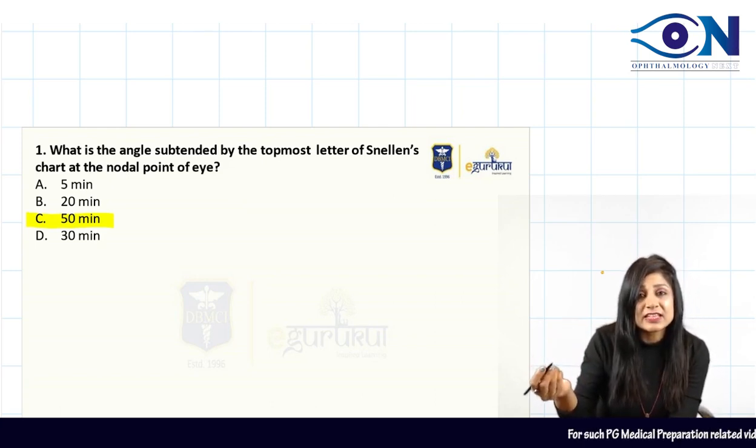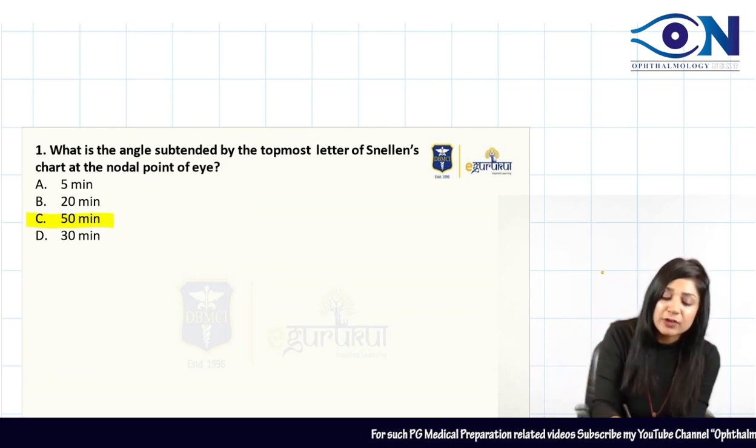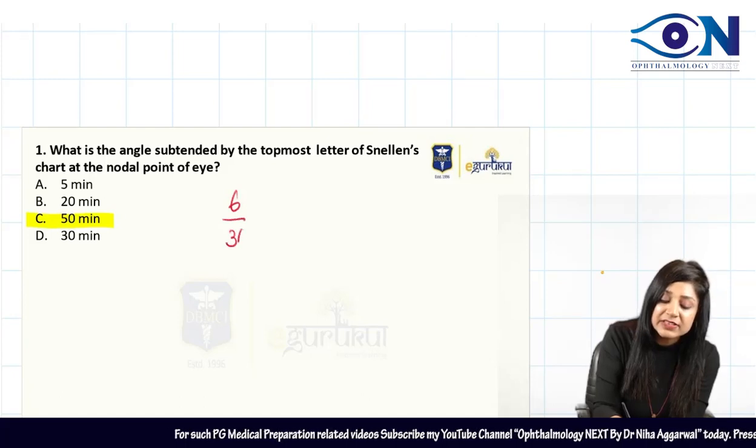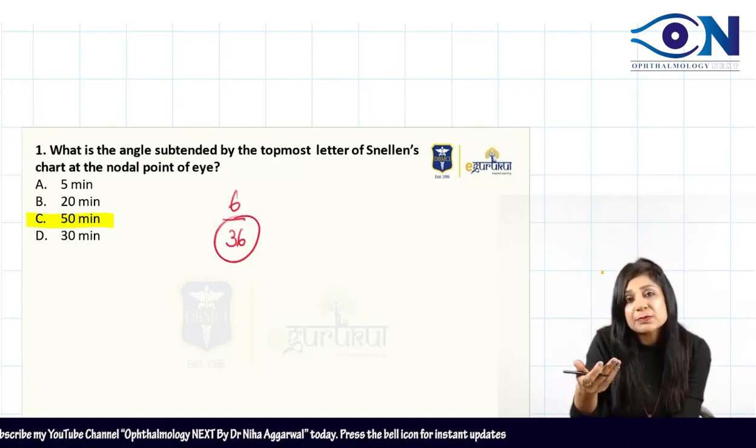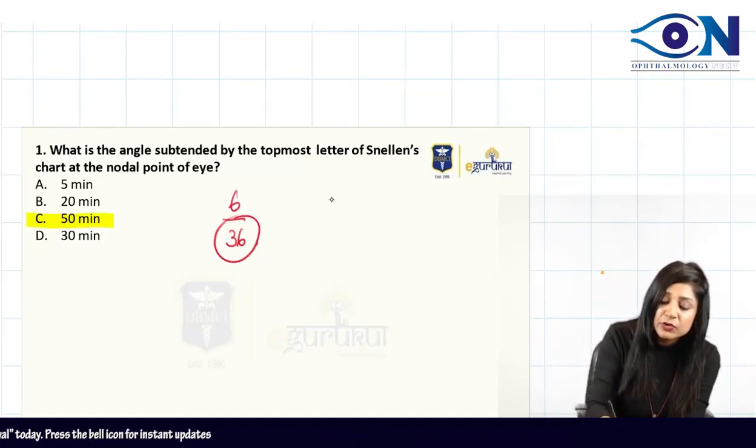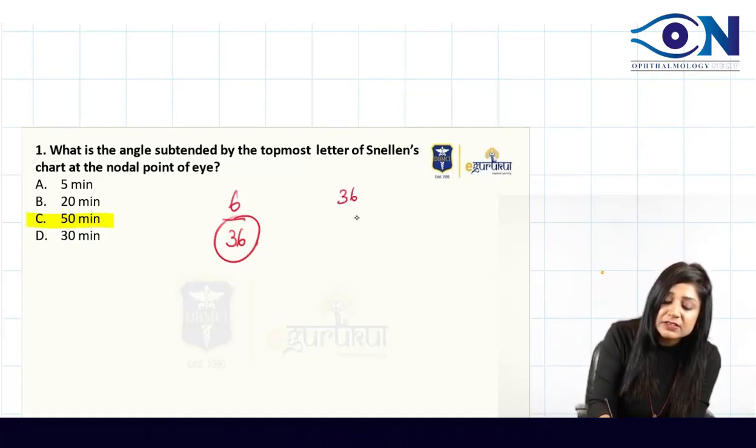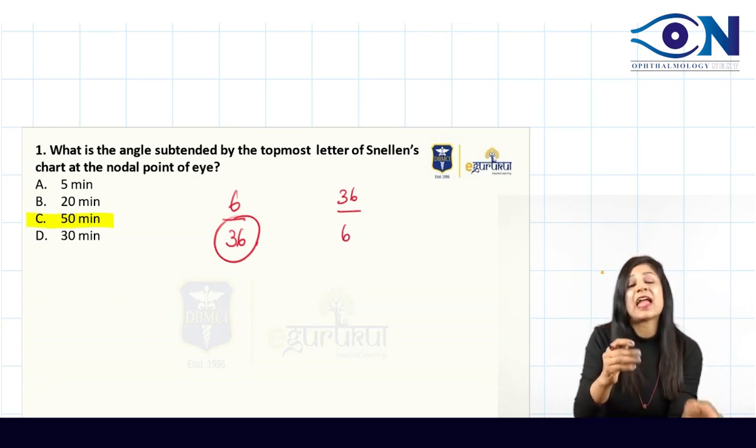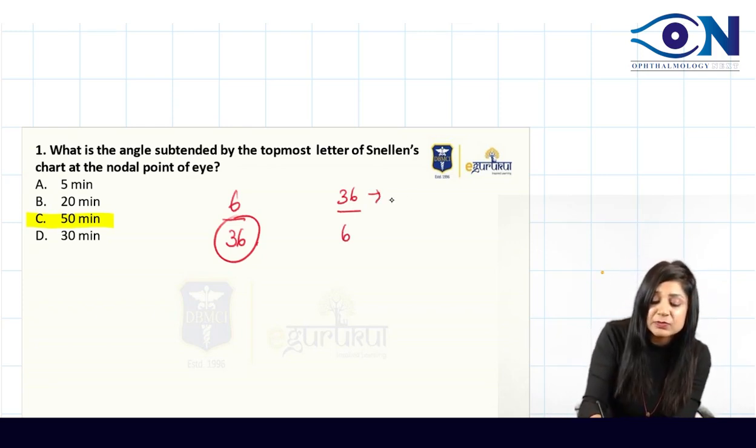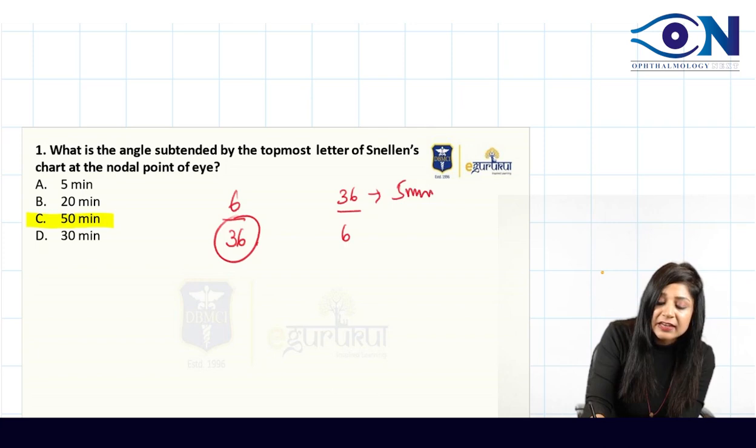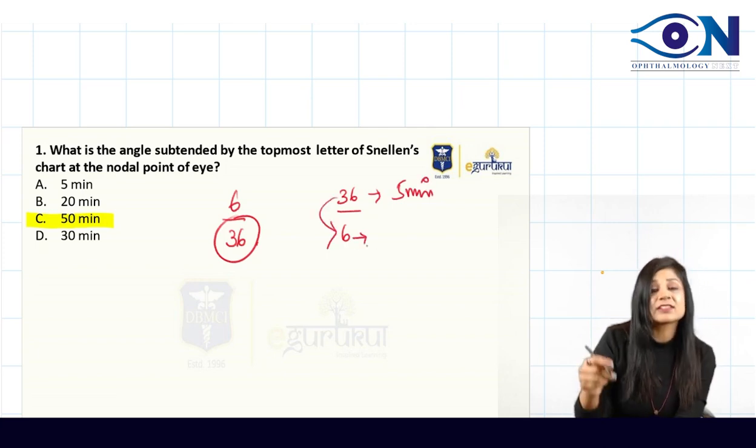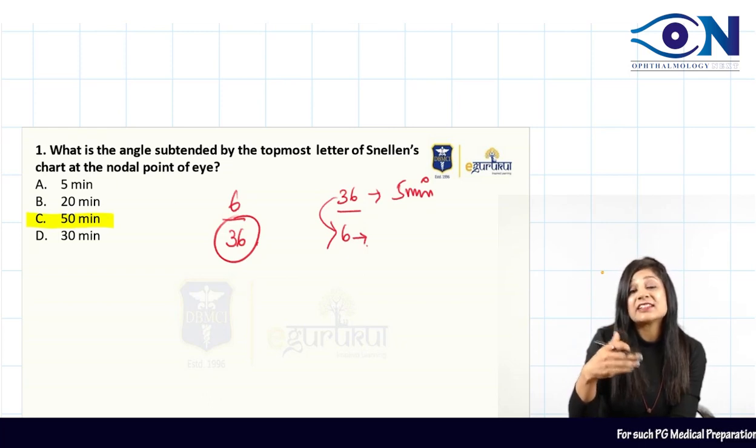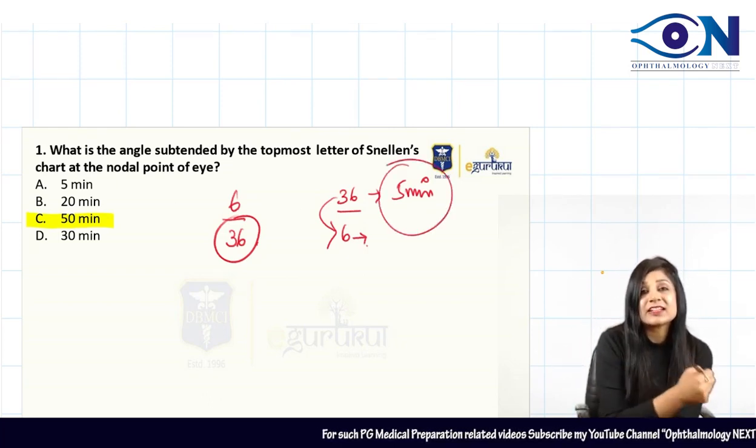This was for the 6/60 topmost letter. Now if I talk about 6/36, if they're asking what is the angle subtended at 6 meters, you have to go from 36 meters to 6 meters. The angle subtended at 36 meters is 5 minutes. How much distance are we decreasing? 36 by 6, that is 6 times. Therefore, the angle will increase 6 times.